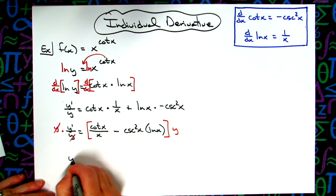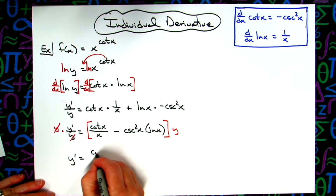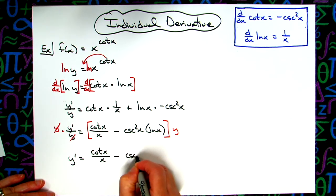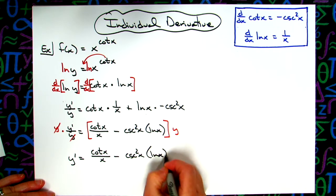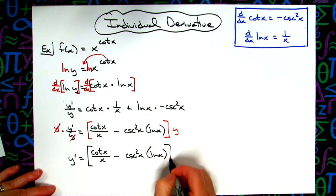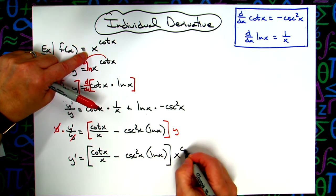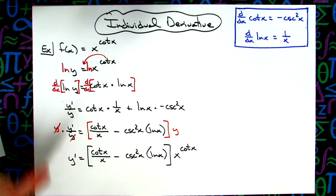So then I can write y' as [cot(x)/x - csc²(x)·ln(x)] times x^(cot x). Replacing the y with what it originally equaled: x^(cot x).